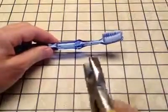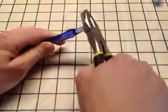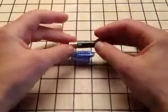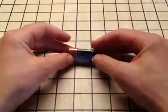Use your cutters to snip the head off your toothbrush. Take your AAA battery, put it on top of your brush head, and tape it on like this.